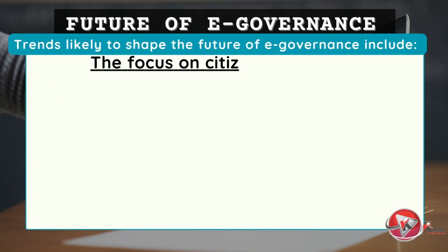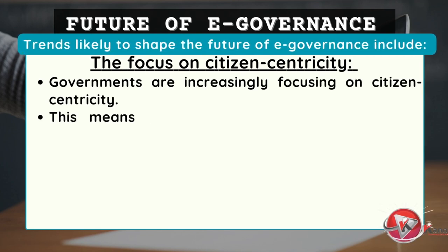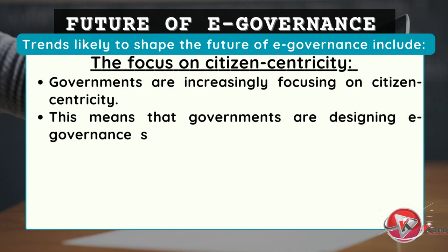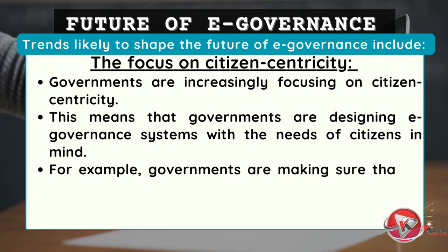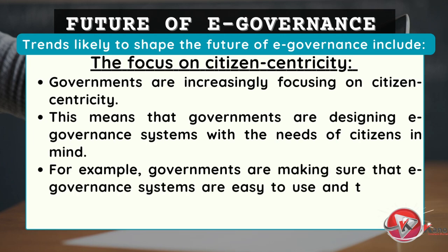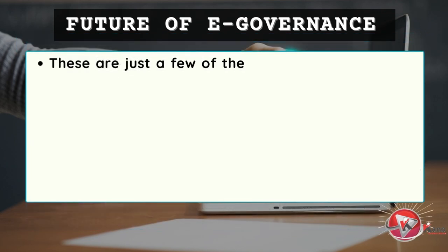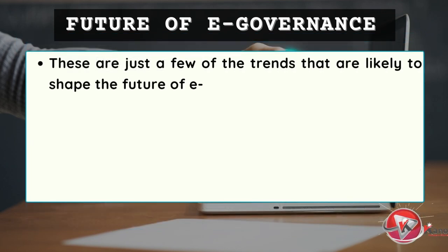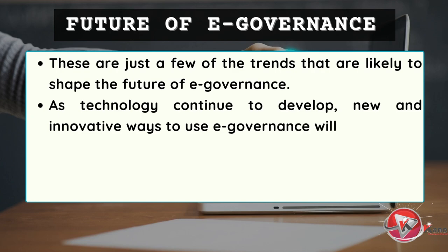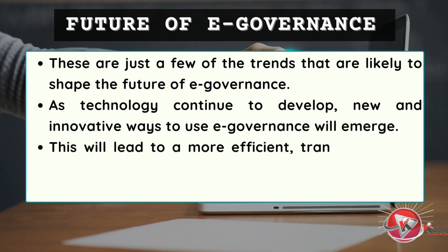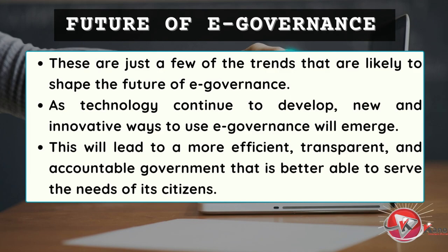The focus on citizen-centricity. Governments are increasingly focusing on citizen-centricity, meaning that governments are designing e-governance systems with the needs of citizens in mind. For example, governments are making sure that e-governance systems are easy to use and that they meet the needs of all citizens, including those with disabilities. These are just a few of the trends likely to shape the future of e-governance. As technology continues to develop, new and innovative ways to use e-governance will emerge, leading to a more efficient, transparent, and accountable government that is better able to serve the needs of its citizens.